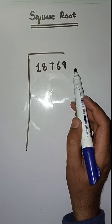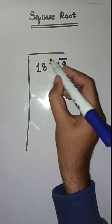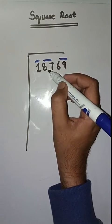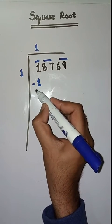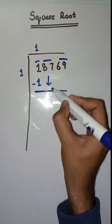So first step is we have to make pairs from right to left like this: 69, 87, and 1. So first we have to solve 1. So we take our number 1. One one's are one, minus karenge, humare pas aajega zero. Next pair is 87.